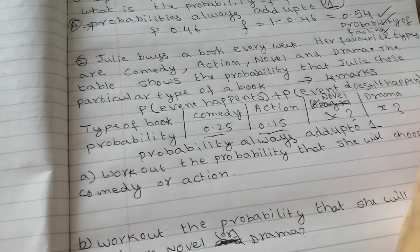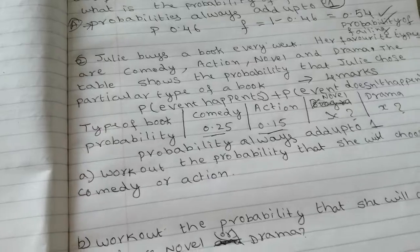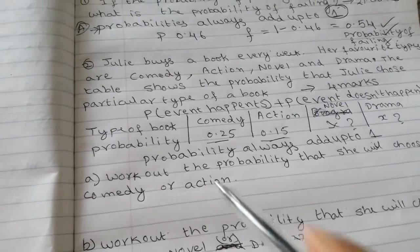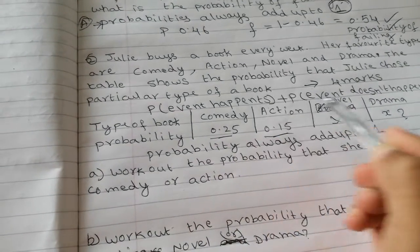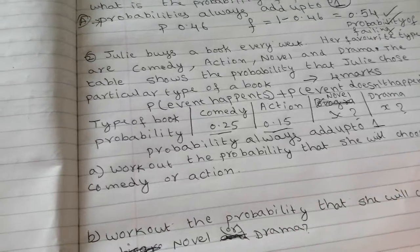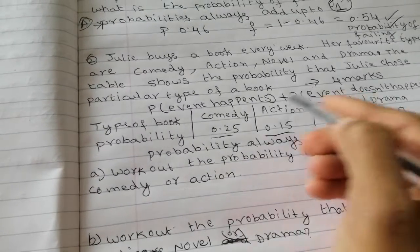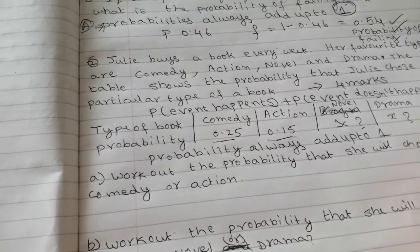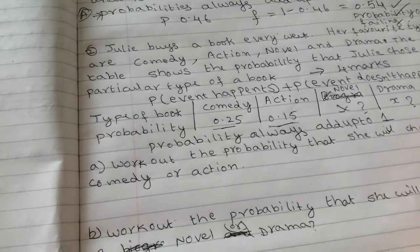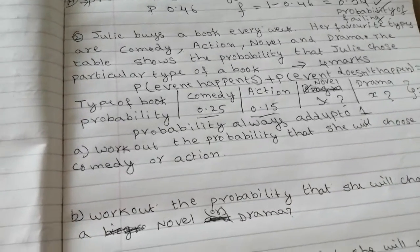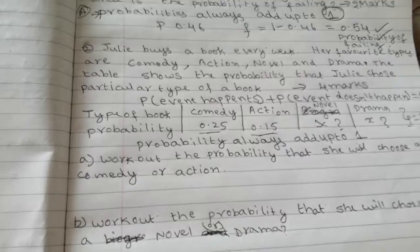This is the golden rule you need to remember for this type of questions. Probability event happens, probability event doesn't happen equal to 1. That means these all table values are equal to 1. Now you need to remember this thing first.